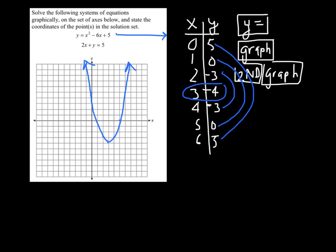The second graph now is the linear equation, 2x plus y equals 5. Now that one is not in y equals form. So you're going to want to get the y by itself by subtracting 2x. This will help you graph it by hand. It can also be used to graph it on the graphing calculator by getting the y alone.